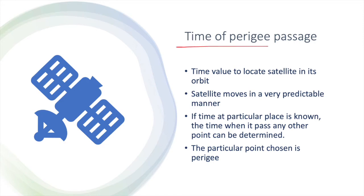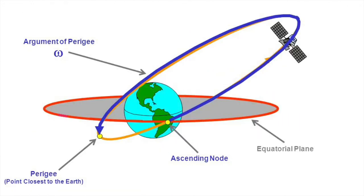The last Keplerian element is called the time of perigee passage. The satellite moves in a very predictable manner. If the time at a particular place is known, the time when it passes any other point can be determined. We need to choose a particular point and record the time at which the satellite is passing that point. This time value is very important to locate the satellite in its orbit — if the time at a particular place is known, the time when it passes any other point can be easily determined.